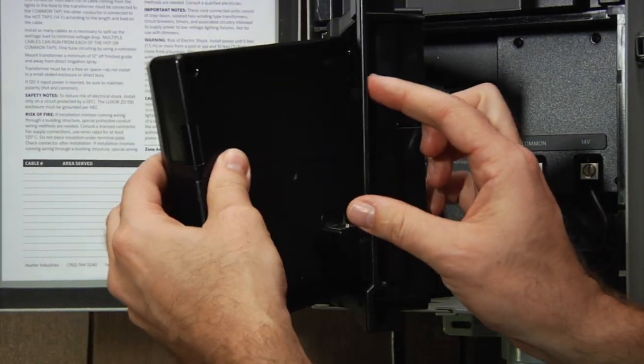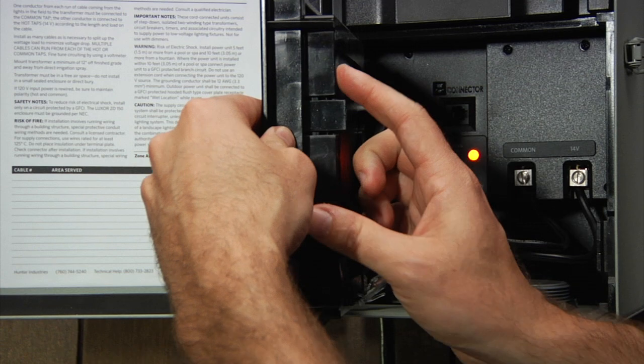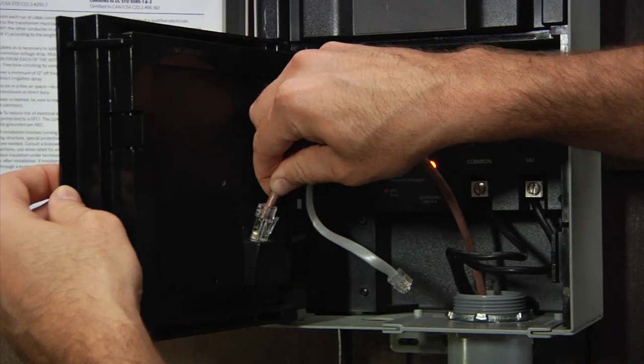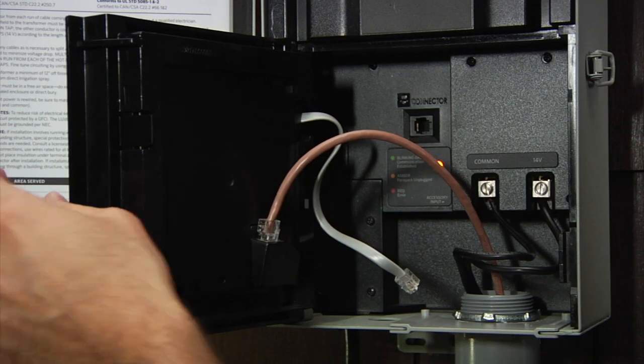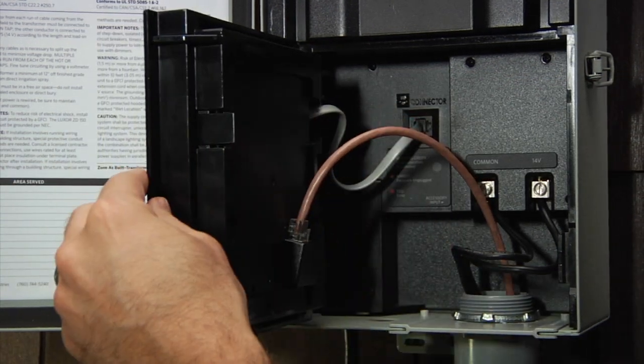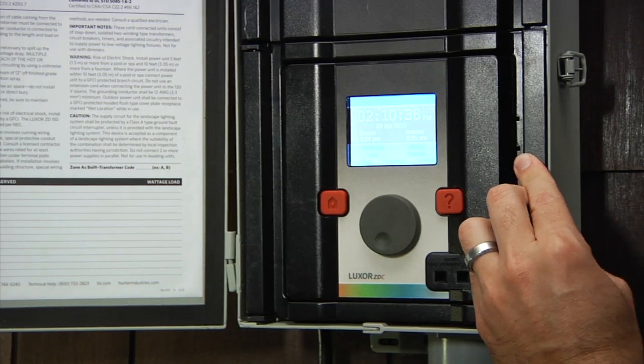Replace the face pack into the bezel and ensure it locks into place. Connect the Cat5 cable to the LAN module and reconnect the communication cable. Close the door and ensure it locks into place.